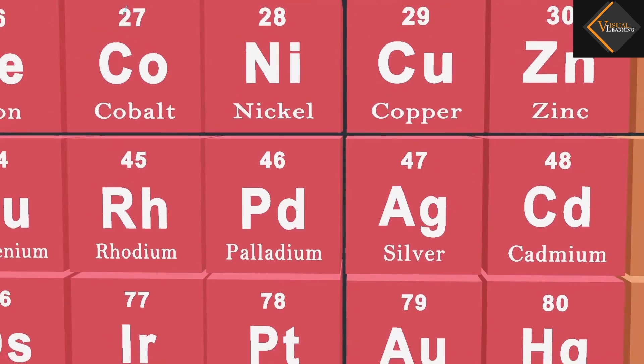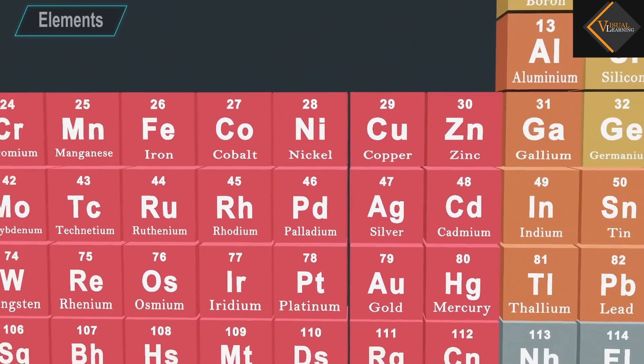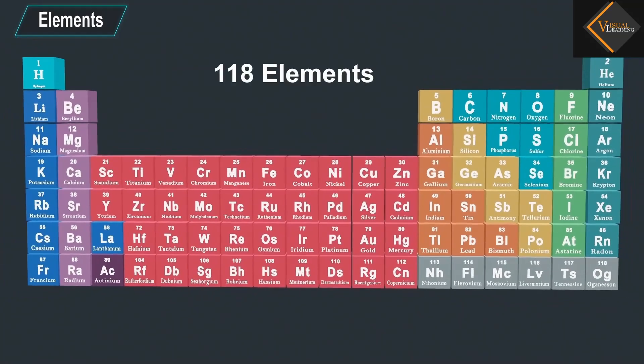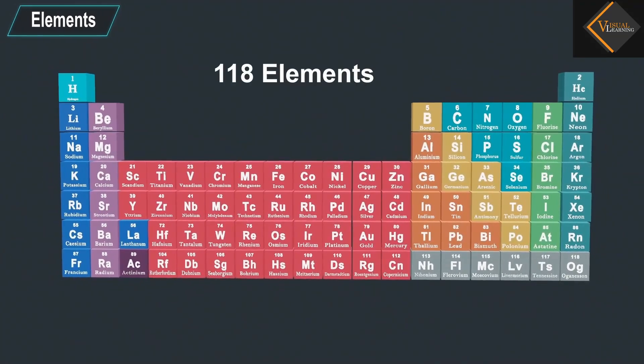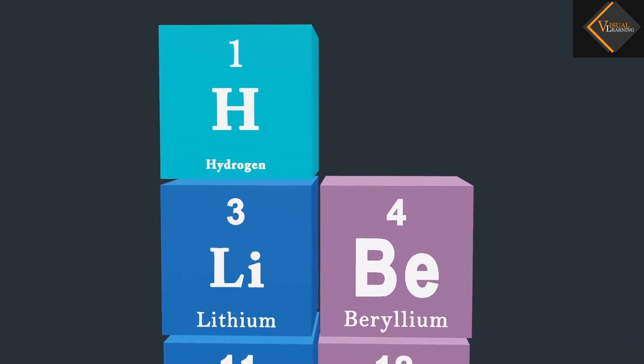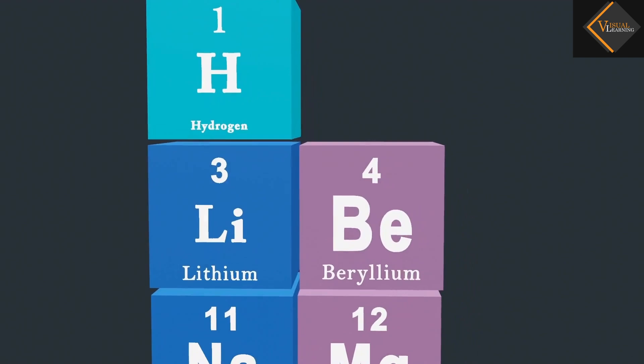These different atoms are known as elements. Till now, up to 118 elements have been discovered. Each element has its unique name and symbol.